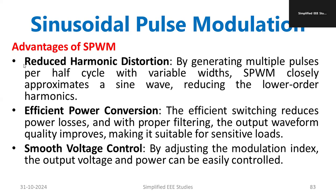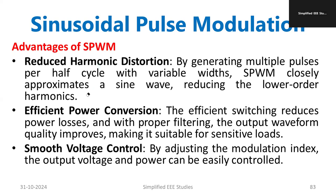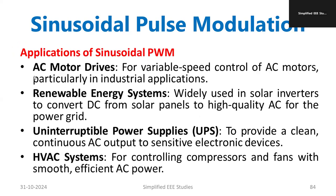The advantages of sinusoidal pulse width modulation are: reduced harmonic distortion, efficient power conversion, and a waveform almost closer to the sinusoidal waveform required for general applications. Smooth voltage control is also achieved — by controlling the modulation index we can easily control the output voltage. These are the three important advantages of sinusoidal PWM.